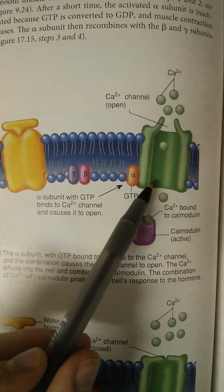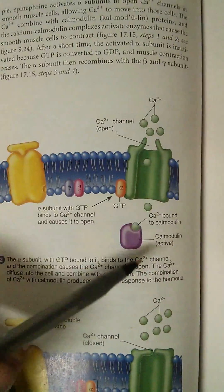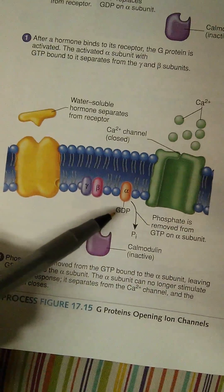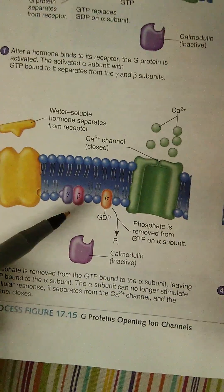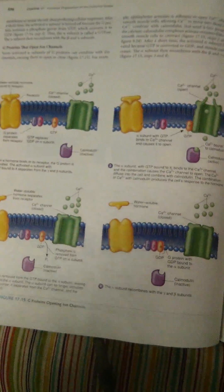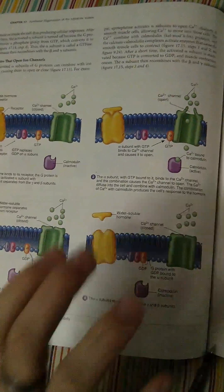and once it bound to the channel, it allowed calcium to rush in. So in that process, it actually went back to GDP, so it kind of lost that energy. So there's lots of different things that G-proteins do. They do a lot of different things. This is just one example of how it opens up a calcium channel.